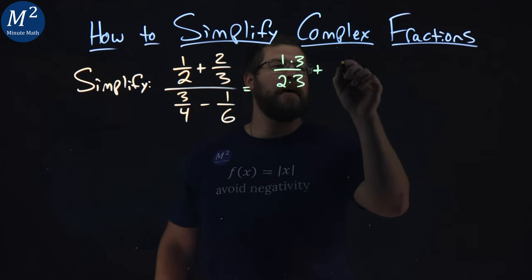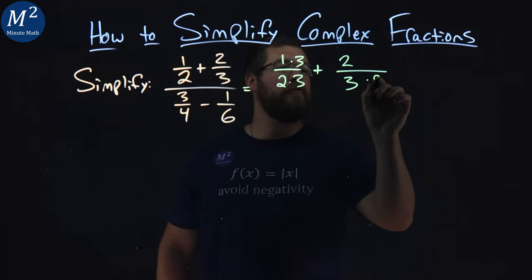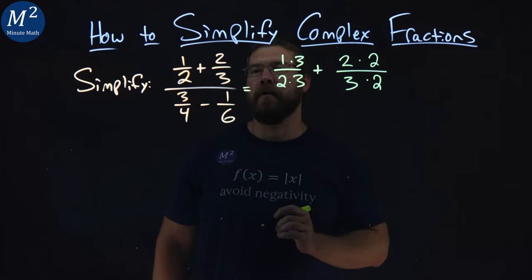Same thing with the right side, we have 2 thirds. To get the 6 in the denominator, I have to multiply 3 by 2, and do the same thing with this other numerator, 2.